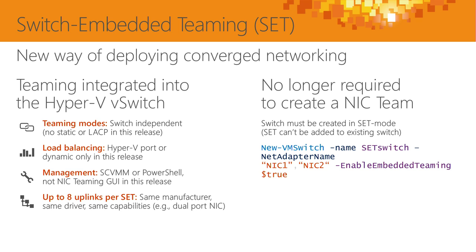Switch-embedded teaming is a new way of converging networking with an additional benefit: teaming is integrated into the Hyper-V V switch. When I create my V switch for VM communication, I can tell it to use these four NICs for this one V switch. Instead of manually creating a team and binding the V switch, it creates it all in one go — the teaming functionality becomes part of the Hyper-V switch, giving improved performance and increased scale. Unlike regular teaming in Windows Server which supports up to 32 mixed-vendor NICs, SET supports a maximum of eight NICs per team and they must be the same. The command is: New-VMSwitch, give it a name, choose the NICs you want, and enable embedded teaming. That simple.